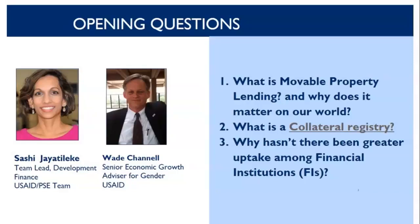Thanks for pointing out the confusion over the terms, because there has been a lot of confusion over the years. We talk about secured lending, which covers all lending where you have a mortgage, a pledge, or whatever. In the United States, secured lending usually refers to lending secured by movable or intangible property. We use asset-backed lending, which most people think of as mortgages, but it can also be movable and intangible property. Movable property lending, I think, is just easier to use.